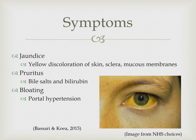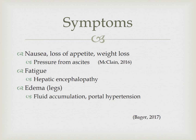What will a person with cirrhosis present with? Jaundice causes yellow discoloration of the skin and also affects the sclera of the eyes and mucous membranes due to high levels of bilirubin. Pruritus or itching is due to bile salt particles and high bilirubin levels within the skin. Bloating in the abdomen can occur due to increased portal hypertension and fluid accumulation. Due to that pressure from ascites, the patient will experience nausea, vomiting, loss of appetite, and weight loss. Malnutrition may also be seen in patients with alcoholic cirrhosis who consume more alcohol than nutritional food.